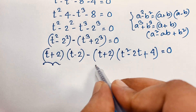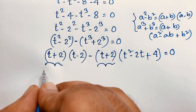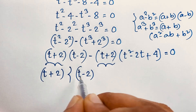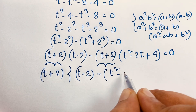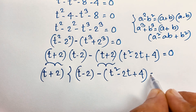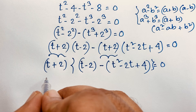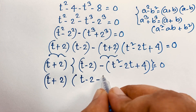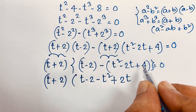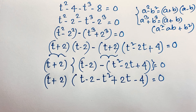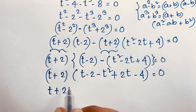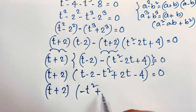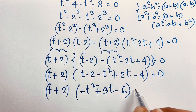Now, t plus 2 appears here and t plus 2 appears here, so t plus 2 is common. Taking t plus 2 as common: t minus 2, with negative sign, minus the quantity t squared minus 2t plus 4, is equal to 0. Expanding: t plus 2 times negative t squared, and 2t plus t gives 3t, then minus 2 minus 4 gives negative 6, is equal to 0.